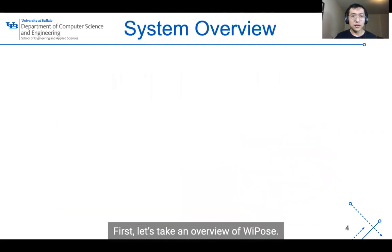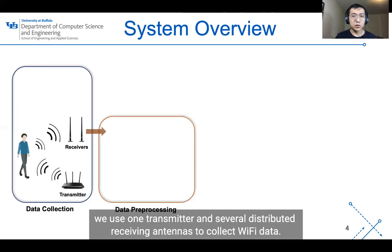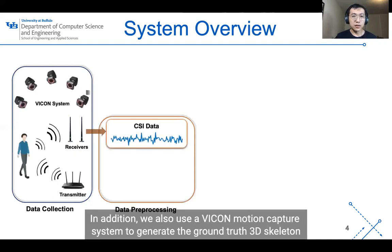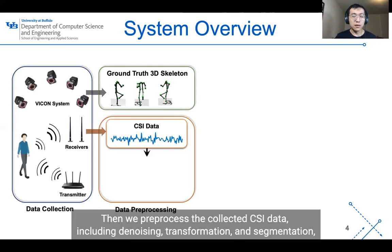First, let's take an overview of Wi-Pose. During the data collection process, we use one transmitter and several distributed antennas to collect Wi-Fi data. In addition, we also use our Vicon motion capture system to generate the ground truth 3D skeleton of the subject.